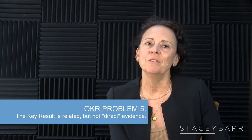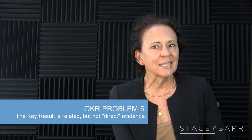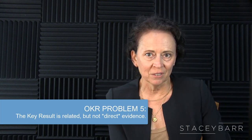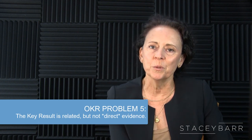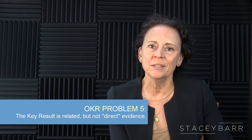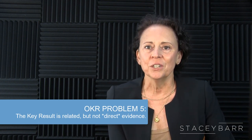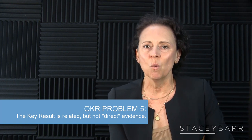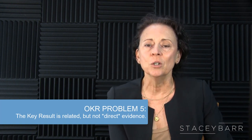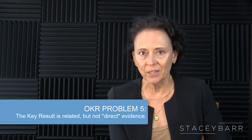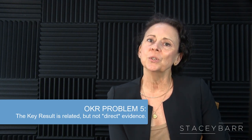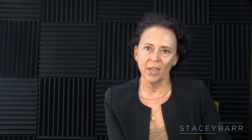Problem five is when the key result is related but not direct evidence. One of the most common problems with measuring what matters — including in OKRs — is when the key results are only somewhat related to the objective but not direct evidence of it. Make sure to write the key results of each OKR as measures designed to be very direct evidence of the objective.